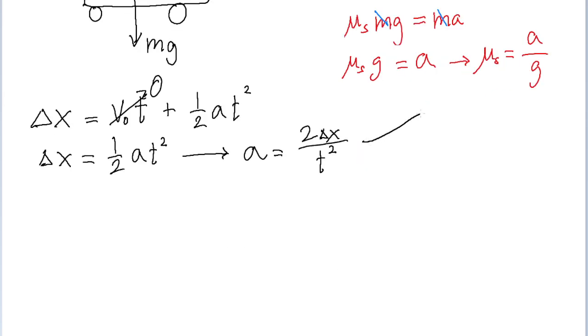Now looking at the formula we found earlier for the coefficient of static friction, that coefficient is just equal to the acceleration divided by g. So the coefficient of static friction is then equal to the formula we just found for acceleration, but with g in the denominator.